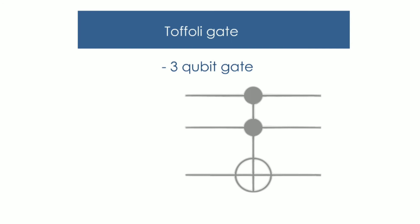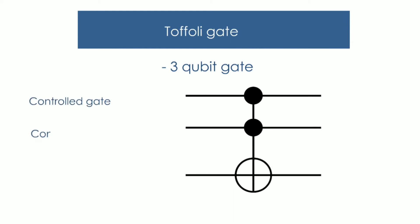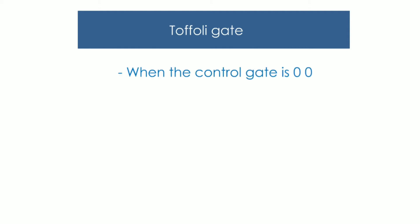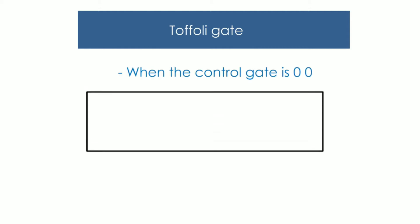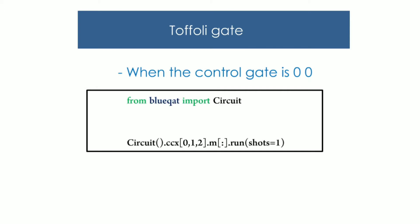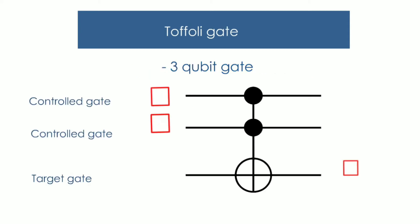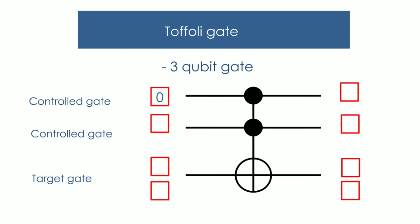A Toffoli gate is a three-qubit gate. This is the circuit representing the Toffoli gate. The first two qubits are known as the control qubits, and the third qubit is known as the target qubit. Now let us check what the output will be if we put both control gate inputs as zero. The Toffoli gate is represented by CCX.